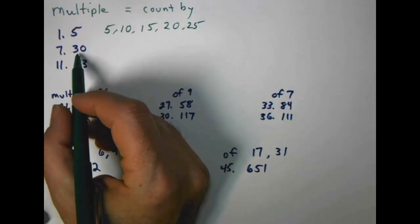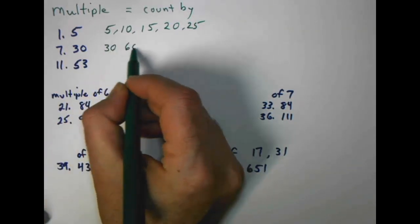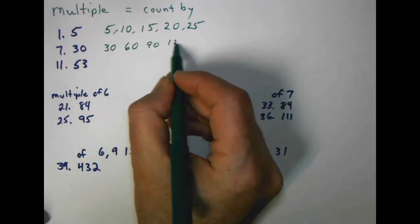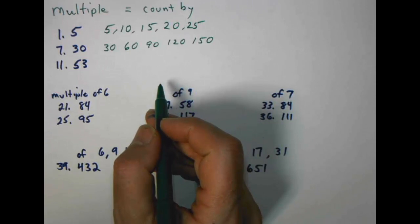If we're doing the first five multiples of the number thirty: thirty, sixty, ninety, one twenty, one fifty, and so on.